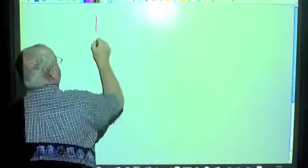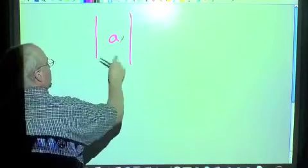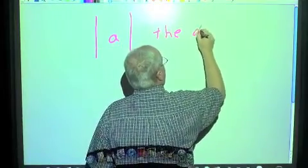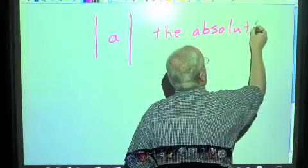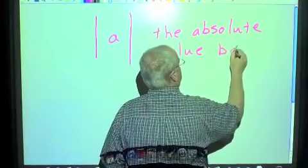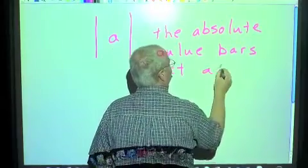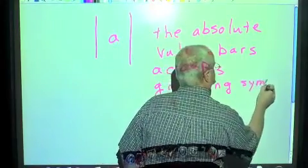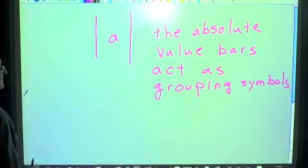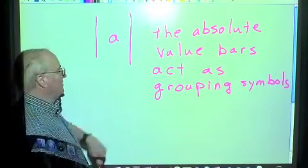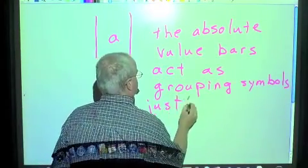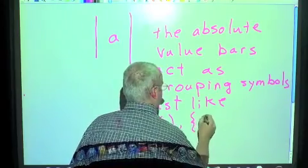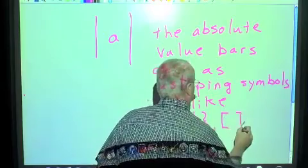The absolute value of any number a looks like that. We put bars around those bars. Also act as grouping symbols. Now where does that come into play? That's right, grouping symbols in our order of operations. They act just like grouping symbols, just like parentheses, or braces, or brackets.